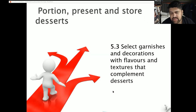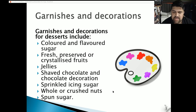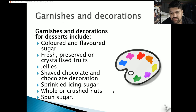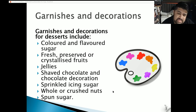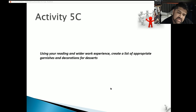Section 5.3: Select garnishes and decorations with flavors and textures that complement the desserts. Garnishes and decorations include colored and flavored sugars, fresh and preserved or crystallized fruits, jellies, shaved chocolates and chocolate decorations, sprinkled icing sugar, whole or crushed nuts, spun sugar, fondant, and candied nuts.